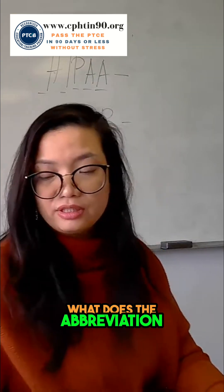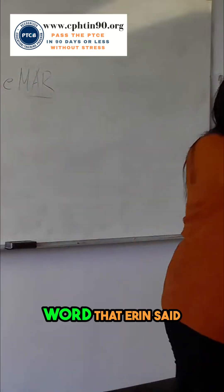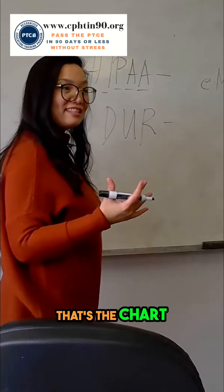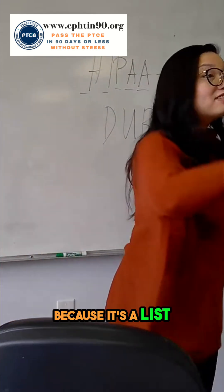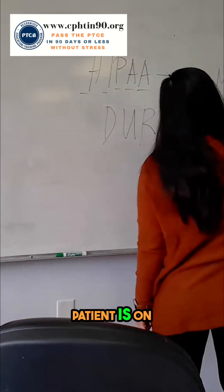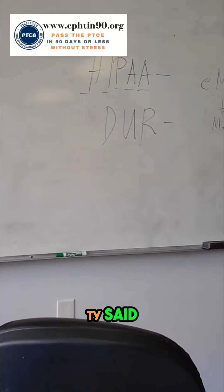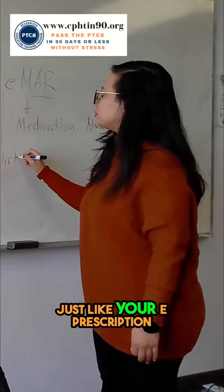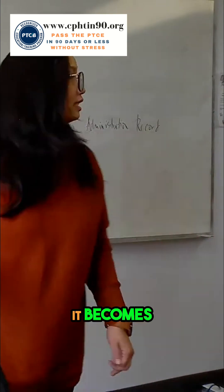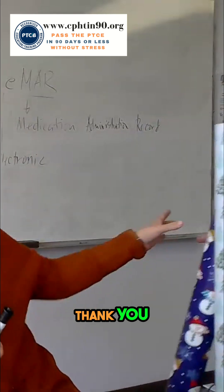What does the abbreviation EMAR mean? If you know MAR, then just add the E. MAR stands for Medication Administration Record — it's a list of medications the patient is on, like a chart. So EMAR is Electronic Medication Administration Record. Just like your e-prescription or e-script, every time you add the letter E, it becomes electronic.